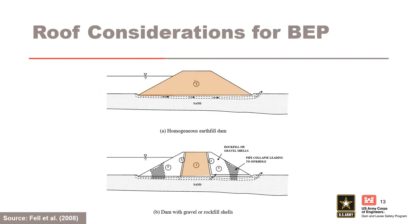In most cases, the core of the embankment is capable of providing a roof to a developing pipe in the foundation because it is typically constructed of impervious or semi-impervious soils with sufficient fines. In the upper figure, a homogeneous embankment provides a roof to a developing pipe in the foundation. However, if there are upstream and downstream zones of non-plastic granular material, like rock fill or gravel shells, that are not capable of supporting a roof, then a pipe through the foundation may not be able to fully develop, as shown in the lower figure.